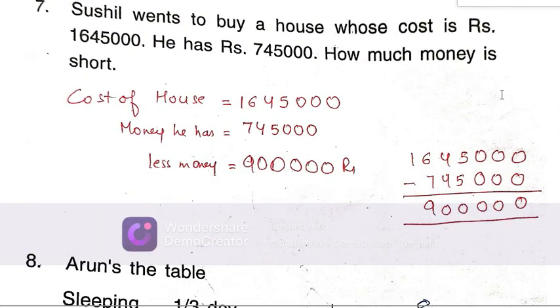She wants to buy a house whose cost is this much. How much money is short? The cost of house minus how much money she has equals the shortage, around 90,000.